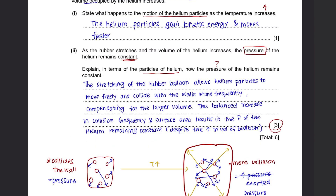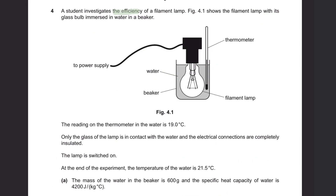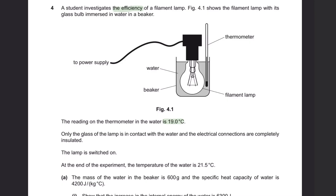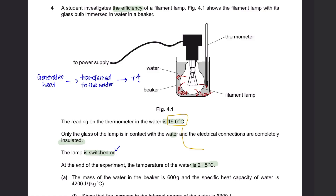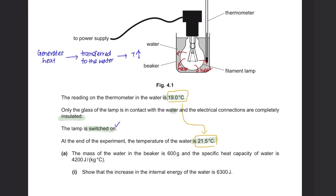Question 4: A student investigates the efficiency of a filament lamp. Figure 4.1 shows the filament lamp with its glass bulb immersed in water in a beaker. The reading on the thermometer in the water is 19 degrees Celsius. Only the glass of the lamp is in contact with the water and the electrical connections are completely insulated. The lamp is switched on. At the end of the experiment, the temperature of the water is 21.5 degrees Celsius. To summarize: when the lamp is turned on, it generates heat which is transferred to the water, causing the temperature to rise from 19 to 21.5 degrees Celsius.